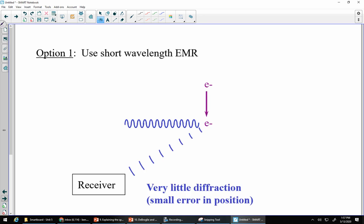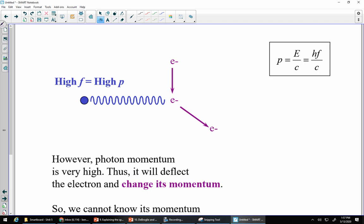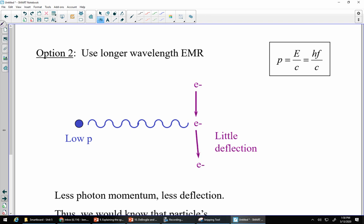We could use really short wavelength EMR. Remember, shorter wavelengths means higher energy means higher momentum. I send it out, it hits my electron, comes back to the receiver. Notice there's very little diffraction here. That means it could have come from anywhere in that sort of range. We have a pretty darn good idea of where that electron was at one particular point in time, but we know that high frequency means high momentum, and high momentum photons collide with electrons and they can actually make them change their course. So we now know nothing. We knew where it was, but we now know nothing about where it's going or where it really came from. So we can know where it was, but we can't know its momentum because we've now changed its momentum as soon as we interact with it.